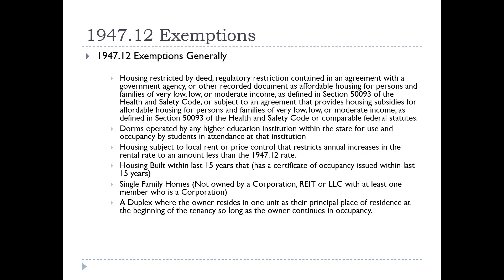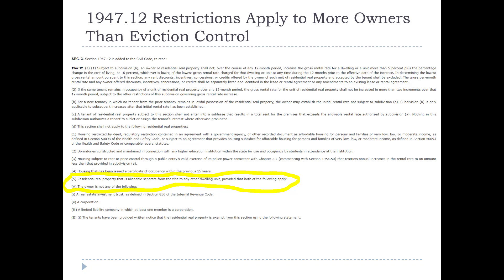What about owners who rent out single-family homes, or even tenants who rent out rooms? There's no provision in 1947.12 for master tenants or tenants that rent out rooms to pay for their housing. It says residential real property alienable from the title of any other unit, and it mentions owner — not tenant owner. So a reasonable attorney would believe tenants renting out rooms are not covered by the single-family exemption.